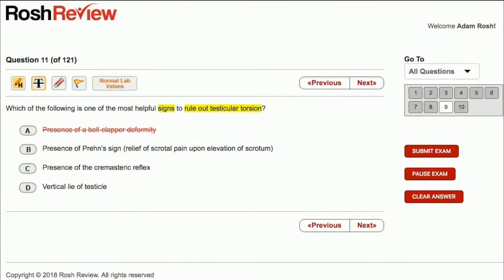Let's go to answer choice B, presence of Prehn's sign, relief of scrotal pain upon elevation of the scrotum. So Prehn's sign, that is more closely associated with epididymitis. The theory is if you lift the testicle that is affected, that has the epididymis attached to it, instead of having gravity pull down on the testicle straining the epididymis, elevation of it will relieve some of the swelling and pain. However, this is not consistent at all with testicular torsion. It can be used in epididymitis but again, not that sensitive and specific either. So we are going to cross off answer choice B.